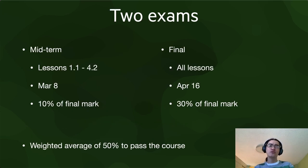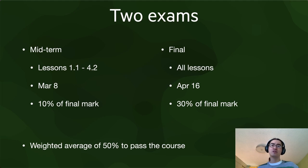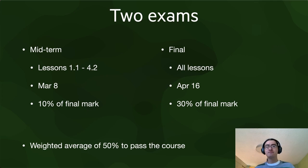There will also be two exams in the course. You can do most of the course asynchronously, but you need to be present on two dates: the midterm and the final exam. The midterm is worth only 10% of the final mark, and it's mostly just to help you understand the kinds of questions we will ask later. It will cover the first eight lessons. The final exam will cover everything and is worth 30% of the final mark. You need a weighted average of 50% on these two exams to pass the course.